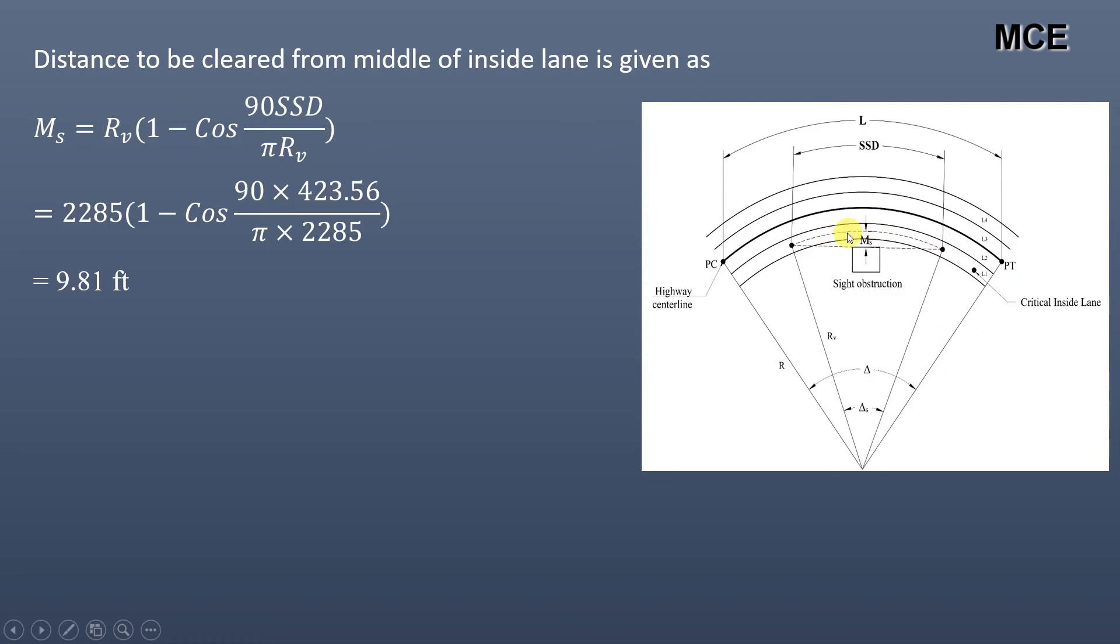This gives us the distance that we have to clear from the centerline of the innermost lane to the side obstruction, but we need the distance from the edge of the roadway to the side obstruction.